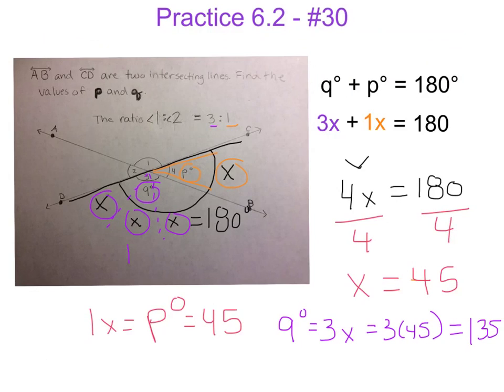So in total, we figured out that q is equal to 135 degrees, and p is equal to 45. Now if we were to add up both 135 degrees and 45 degrees, it would equal the supplementary angles of 180, since they are located on this same line.